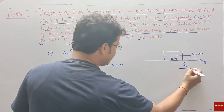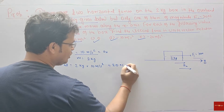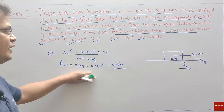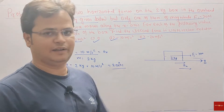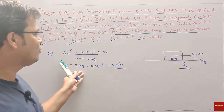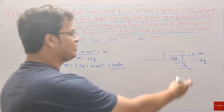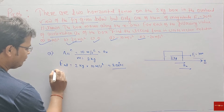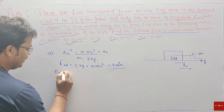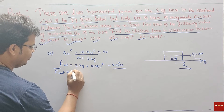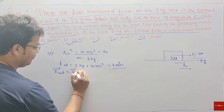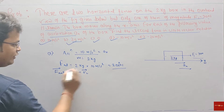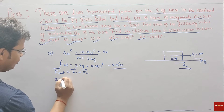For Case A, acceleration is 10 m/s². The net force is 20 Newton. Writing in unit vector notation: 20 i-cap. So here we get net force. Using net force, F-net is equal to F1 plus F2 resultant.